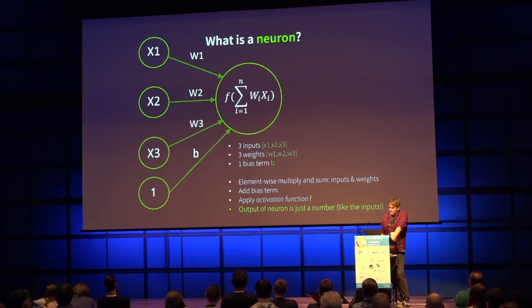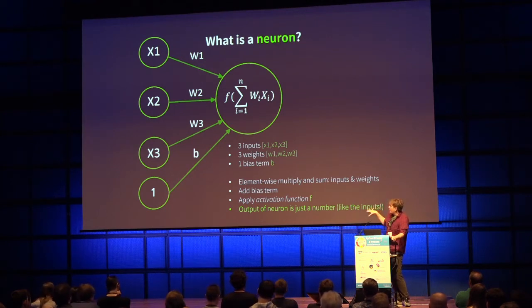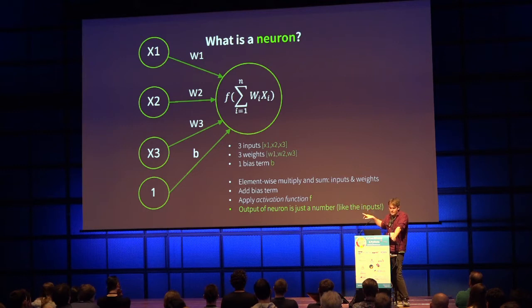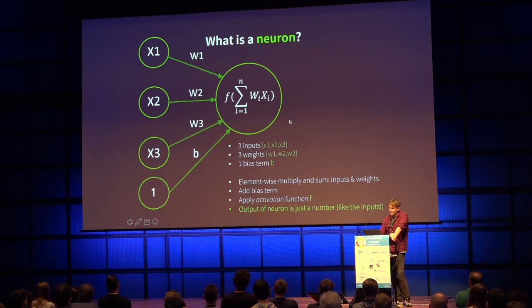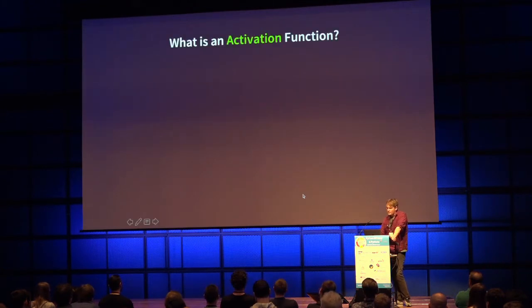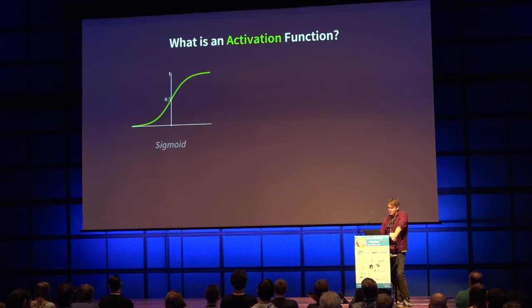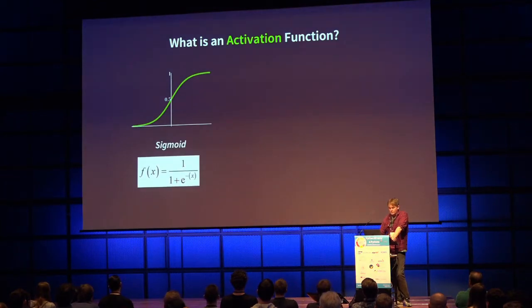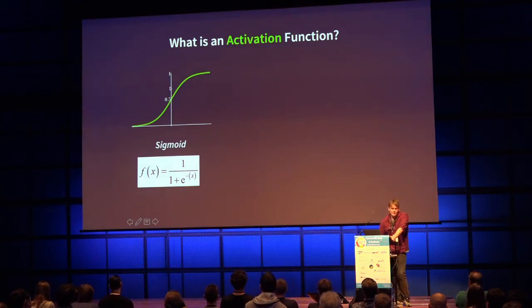What is a neuron? It's really just a combination of inputs and weights. We might have three inputs x1, x2, x3 — we multiply each with its corresponding weight, sum them up, add a bias term, then apply an activation function. The output of the neuron is just a single number. The most common activation function is the sigmoid, which takes any input and produces an output between 0 and 1.